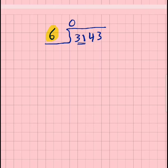So how many times does 6 go into 31? 6 goes into 31 five times because 5 times 6 is equal to 30. So we're going to subtract that away. 31 take away 30 is equal to 1. Now we bring down this 4. So we end up with 14.